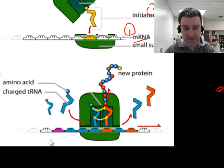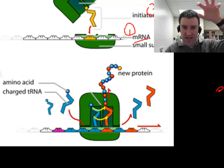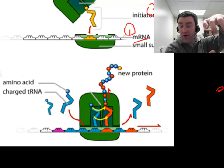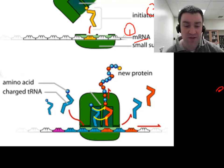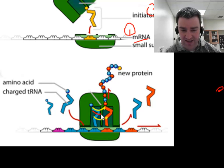Step one is that the ribosome needs to attach in the first place. The rRNA helps the two subunits attach at the right place — the protein-coding part of the messenger RNA. Once it attaches, tRNAs are able to come in at the right place and drop off their amino acid. A tRNA carries the whole chain of amino acids until the next one comes in, then the new tRNA takes the place of the old one and takes the chain too.